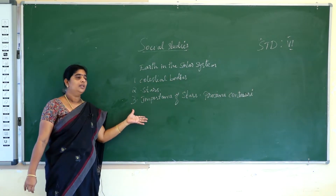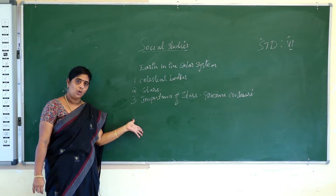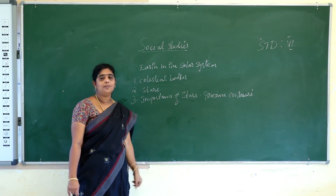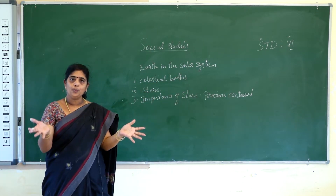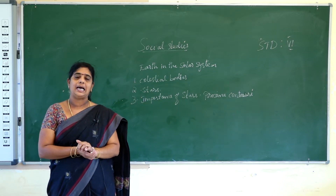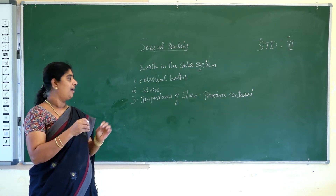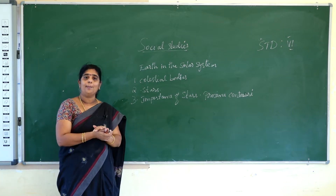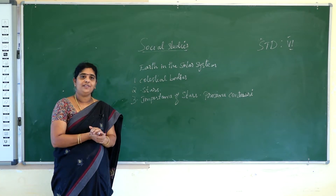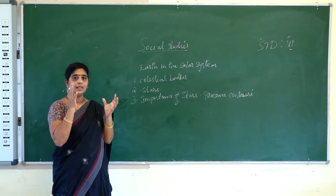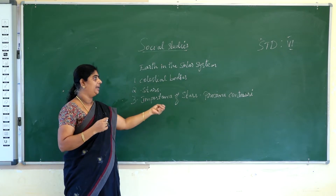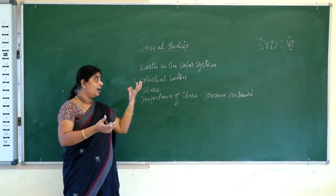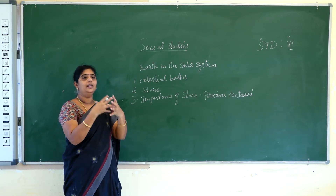Now we will continue. What is gravity? Like the sun and Proxima Centauri, we have groups of stars made of gas and dust, and they are bonded together by gravity. What is gravity, children? The clusters of stars are bonded together by gravity.